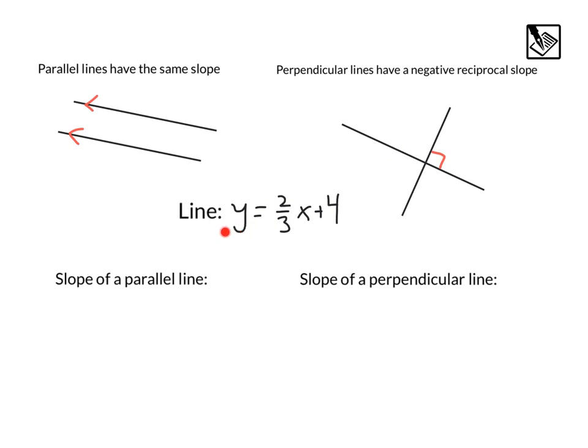Let's take this example here. We have a line, y equals 2 thirds x plus 4. We know that our m value is that 2 thirds in y equals mx plus b. So a parallel line would have the same slope. That would be a slope of 2 thirds.